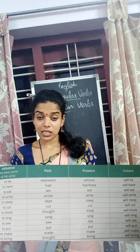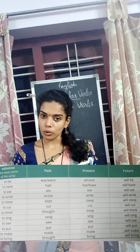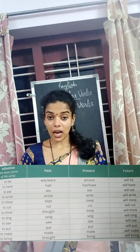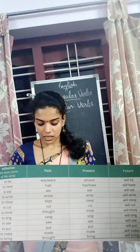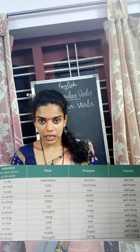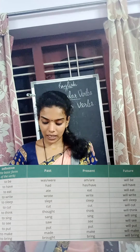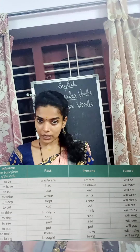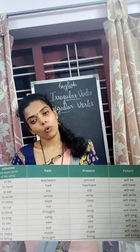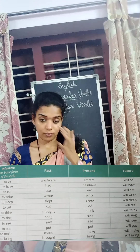'Write': past is 'wrote'; present 'write'; future 'will write'. 'Sleep': past 'slept'; present 'sleep'; future 'will sleep'. 'Cut': past is 'cut'; present is 'cut'; future is 'will cut'. Here there won't be any changes — the verb becomes the same word.